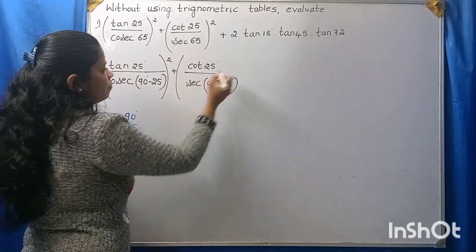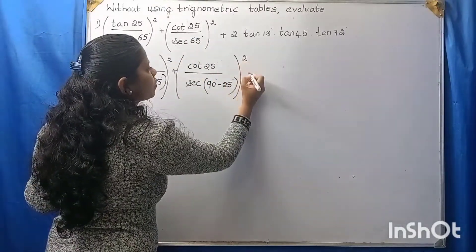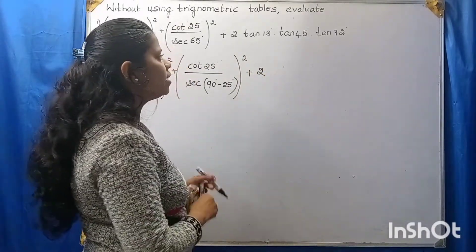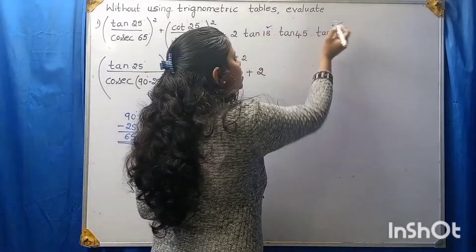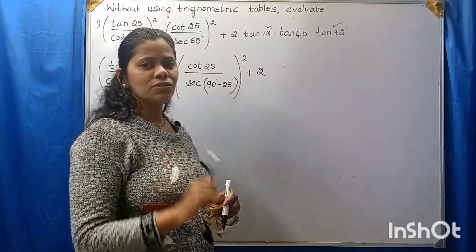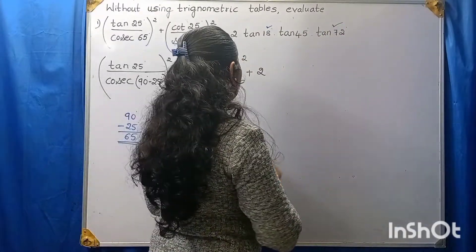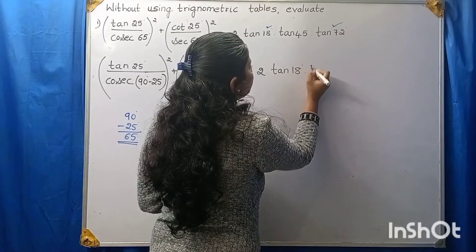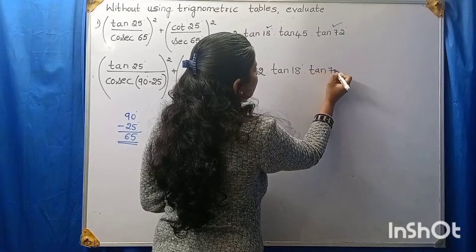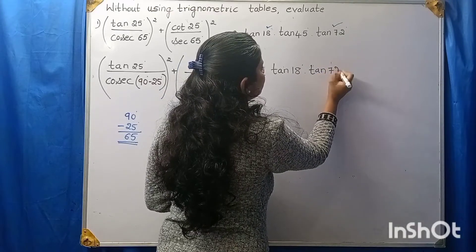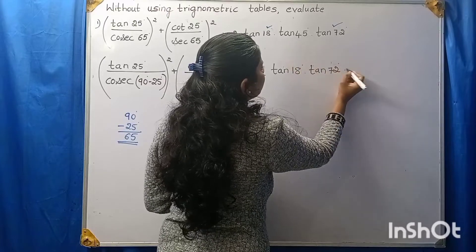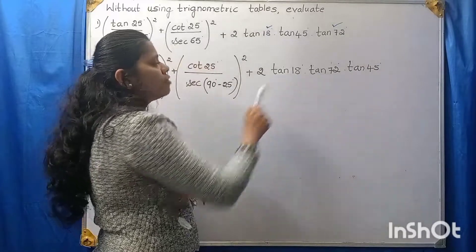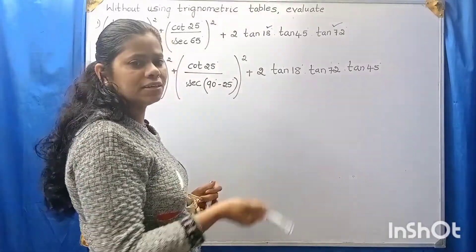Whole square plus 2. This tan 18° and tan 72° let me write together: tan 18° into tan 72° into tan 45°. Here, these two have been written together just to make it easy.